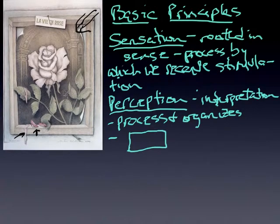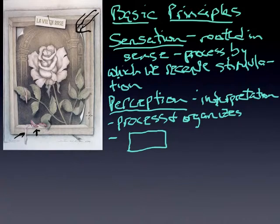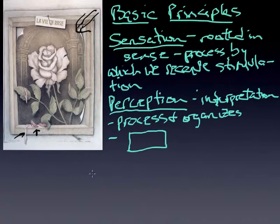We don't pay much attention to sensation until we are affected by it somehow. For example, if you go to the eye doctor's office and they dilate your pupils, suddenly your sensation is off — you can't make things out, or bright light impacts you. Those are good examples of disruption in sensation.